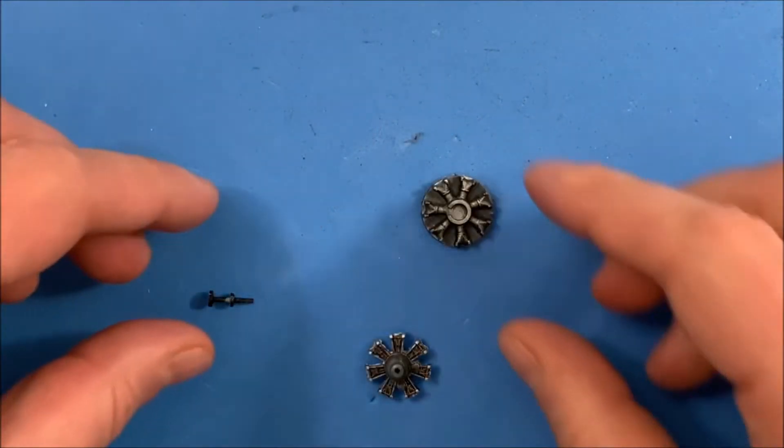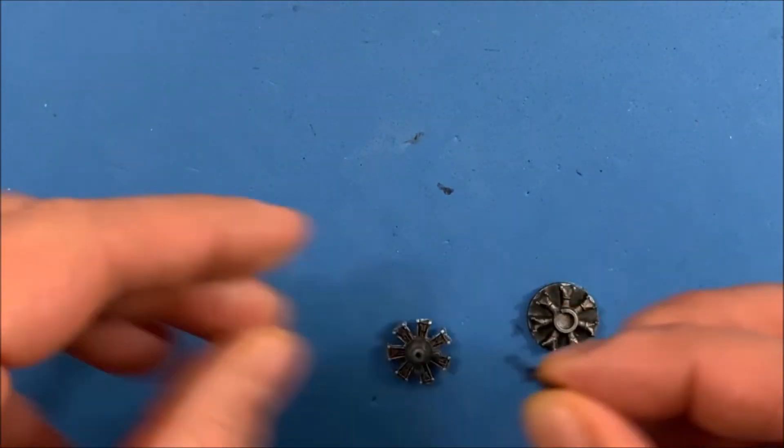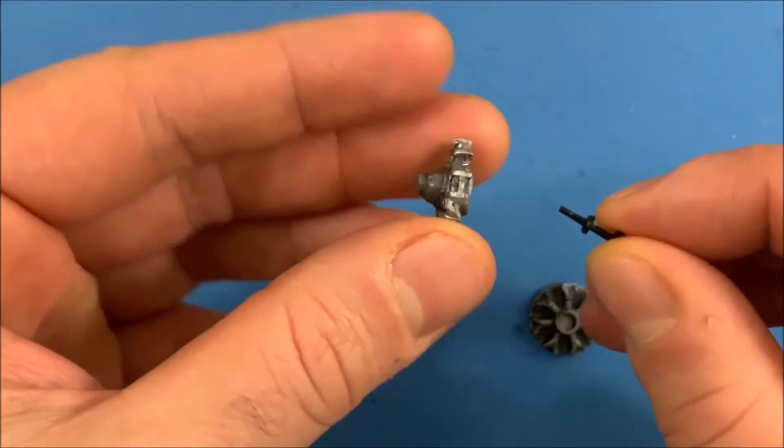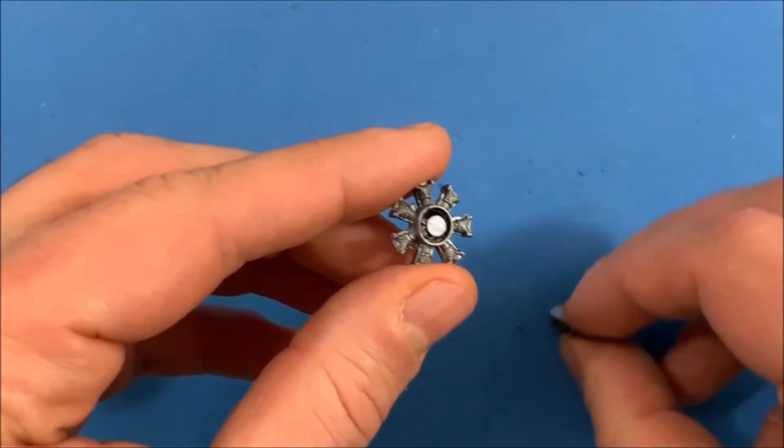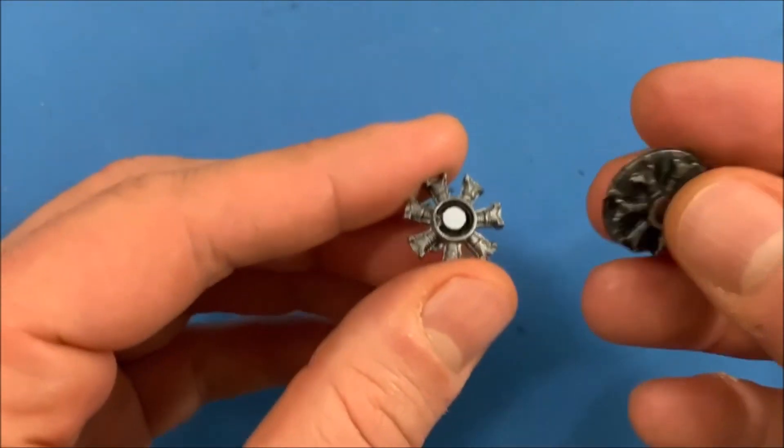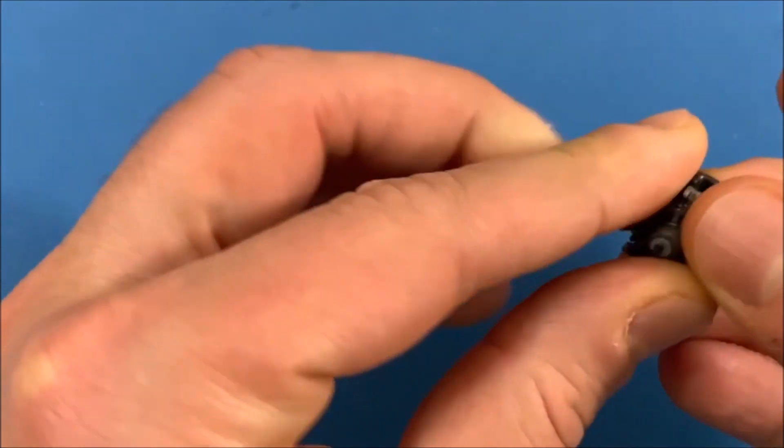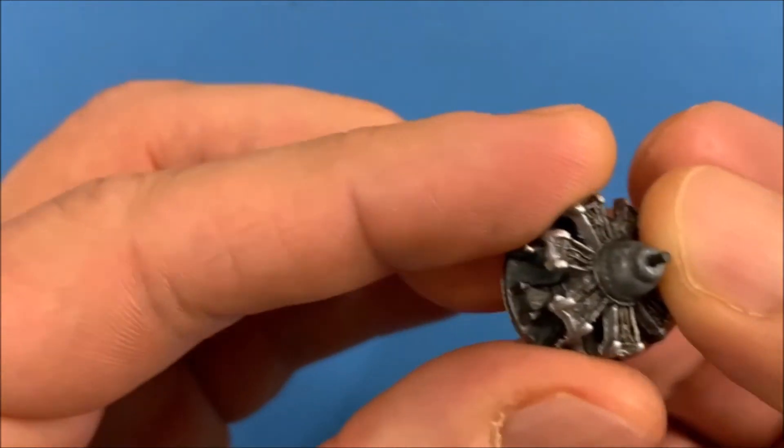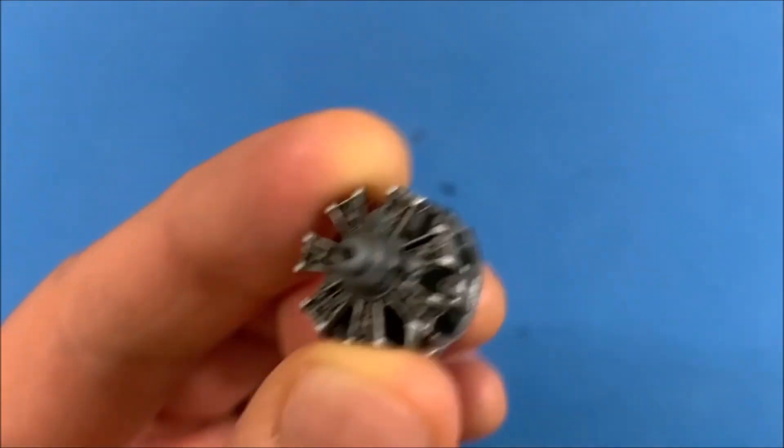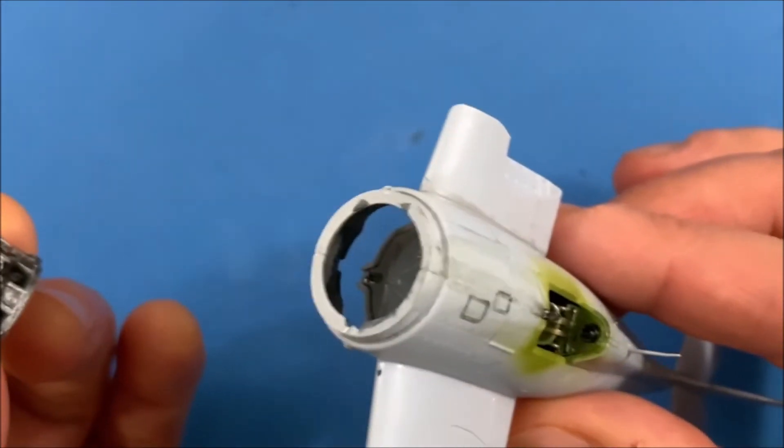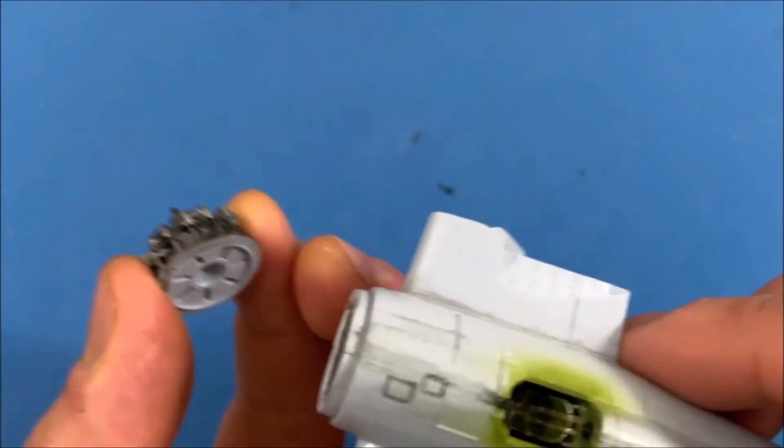Alright so now we're all painted up and everything. So with these three things, this is how these are going to go together. This piece will go in here and there's a key right there and you just match it up. And you get the piece like this. And you take the airplane, again there's a little spot on the right hand side that you just line it up with.